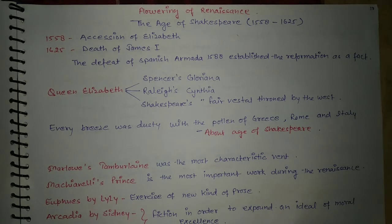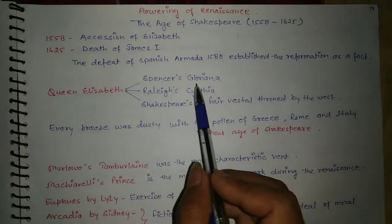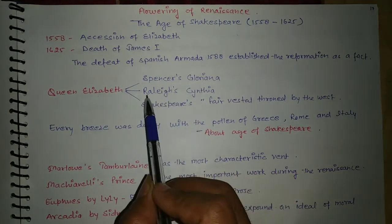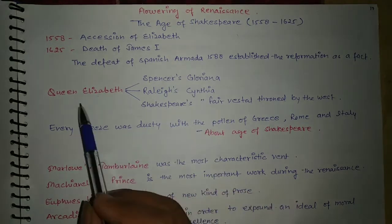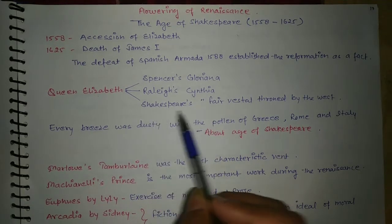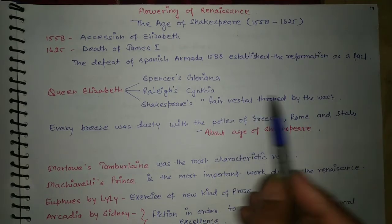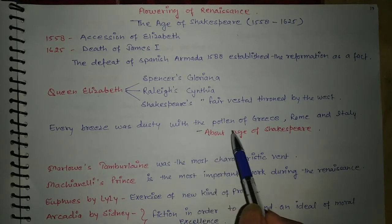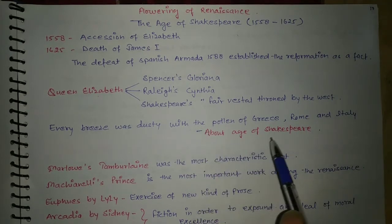In this period, Queen Elizabeth played an important role in different writers' writings. Spenser showed Elizabeth as Gloriana, Raleigh shows her in his works as Cynthia, and Shakespeare used the phrase 'fair vestal throned by the west.' Every breeze was dusty with the pollen of Greece, Rome, and Italy — this is written about the Age of Shakespeare because knowledge was coming from these places.